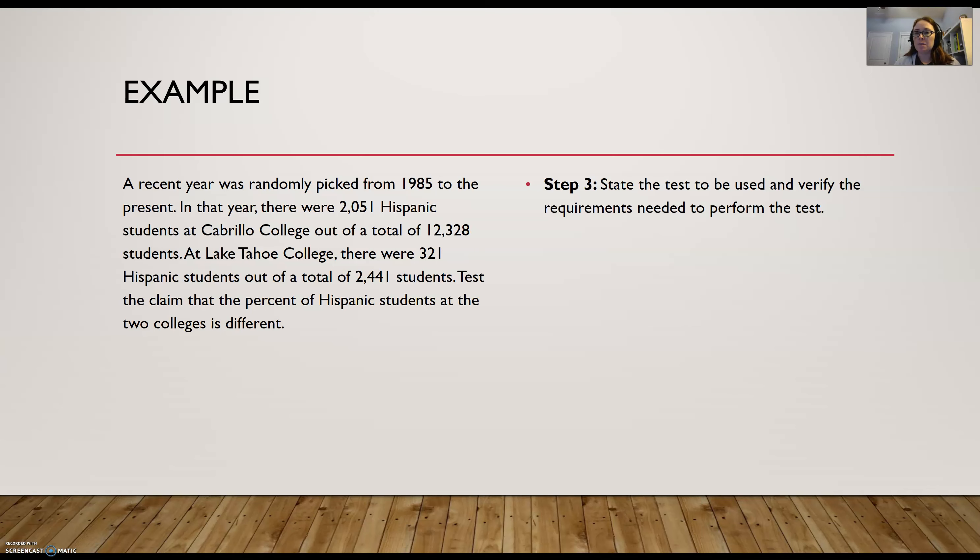On to step three. So state the test to be used and verify the requirements. Well, we are dealing with proportions, so this is a Z-test, and I've got two samples instead of just one, so this is a two-sample Z-test for proportions. And the requirements for this test is that X1 and X2 are at least 5. Well, we were given those values, and they were definitely greater than 5, so we are good to go with this test.